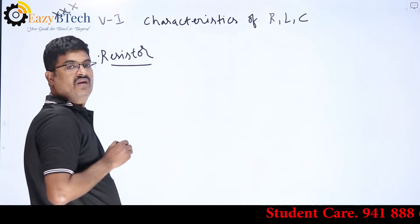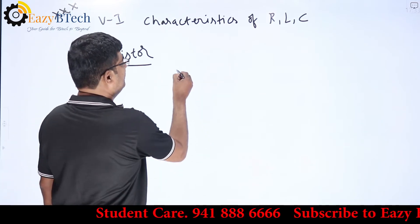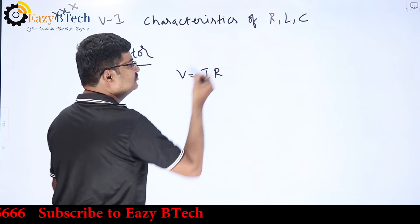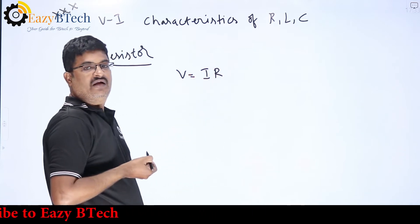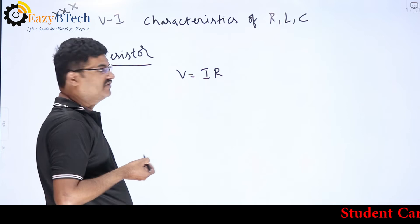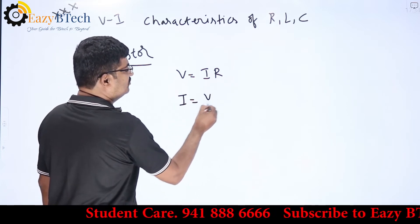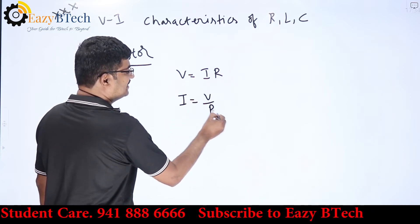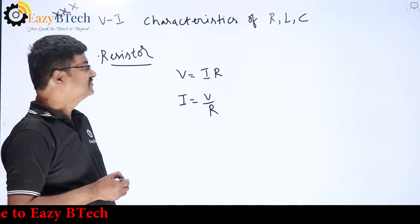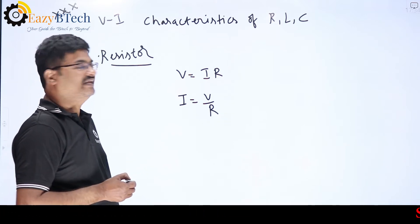For the resistor, the voltage equation is v = iR, from Ohm's law. The current equation is i = v/R. These are the basic voltage and current relations for a resistor.